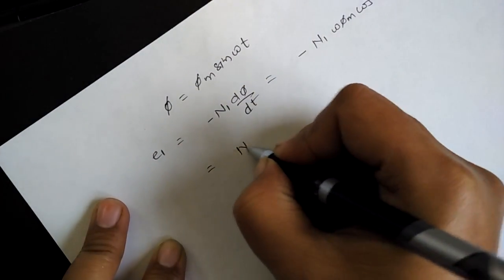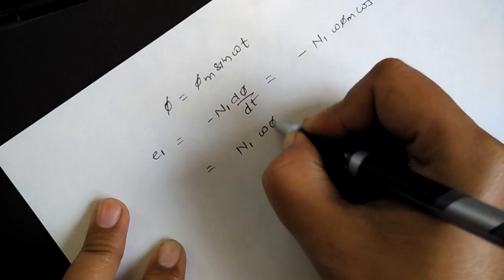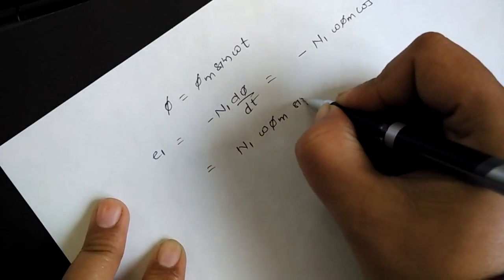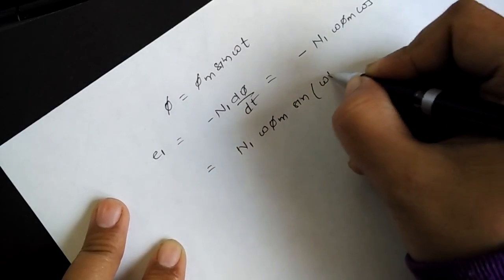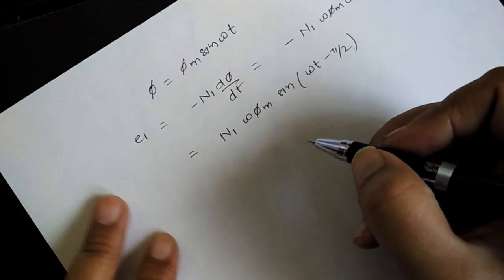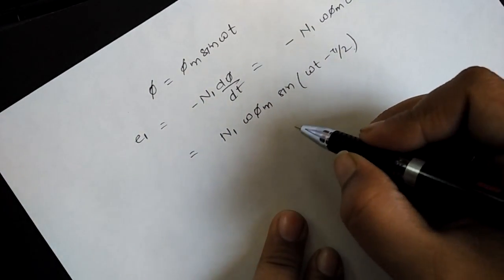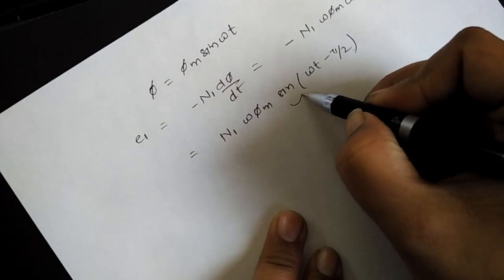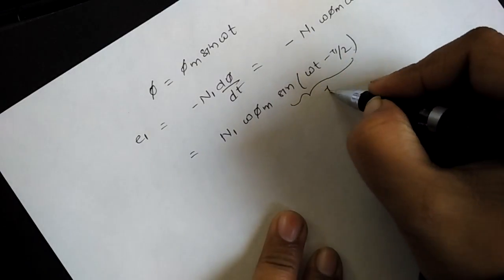Next, it should be n1 omega phi_m into sin omega t minus pi by 2. Now for this flux to have a maximum value, we can say that this term should be equal to one.